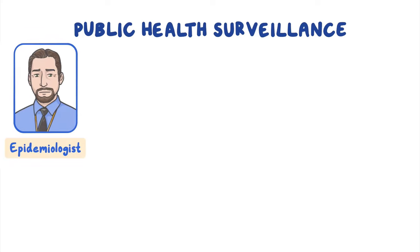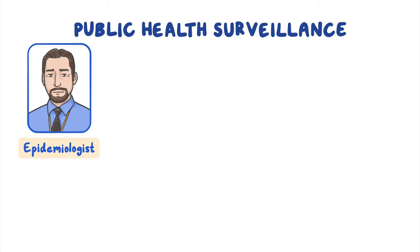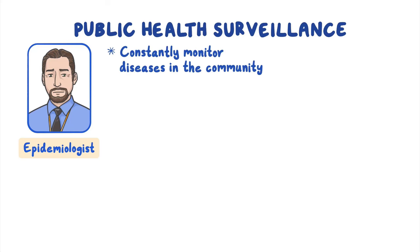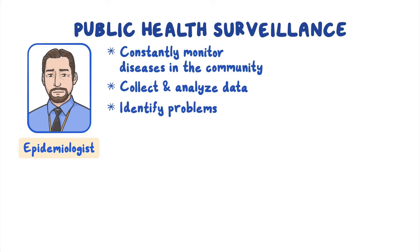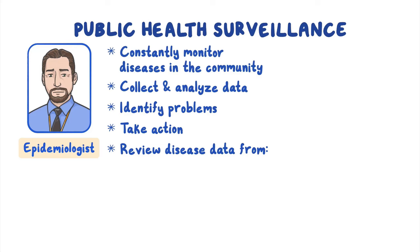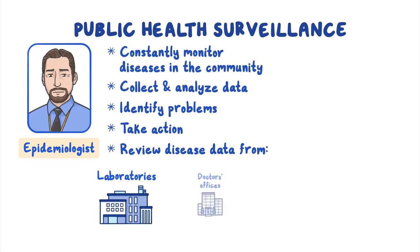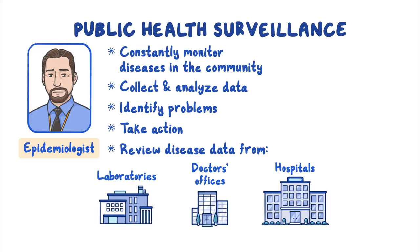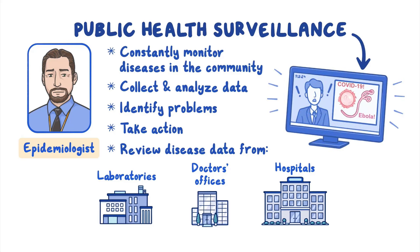It starts with experts, like epidemiologists, who constantly monitor what diseases are occurring in the community. They collect and analyze data to identify problems and take action. They review disease data from sources such as laboratories, doctors' offices, and hospitals. When you hear about the number of COVID-19 cases in a state or an outbreak of Ebola in a country, those reports come from public health surveillance.